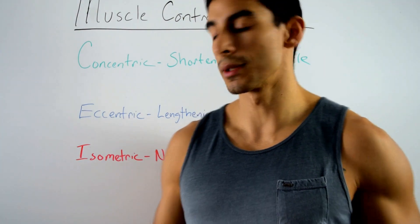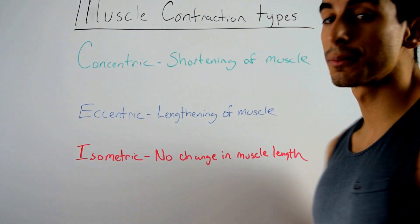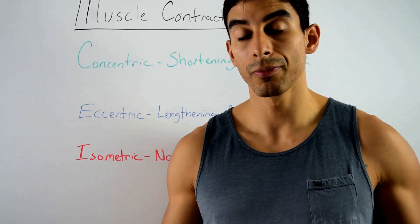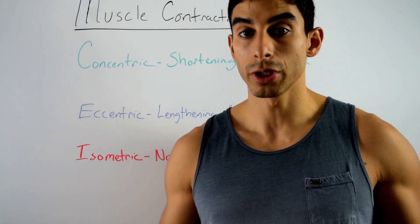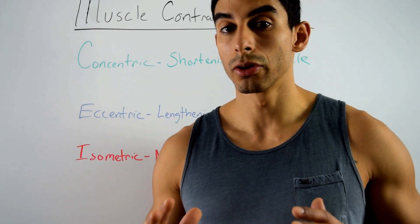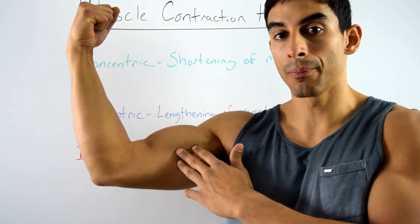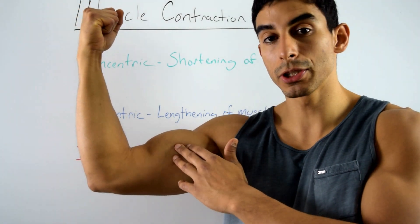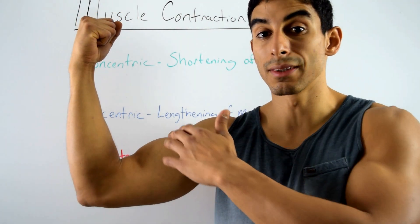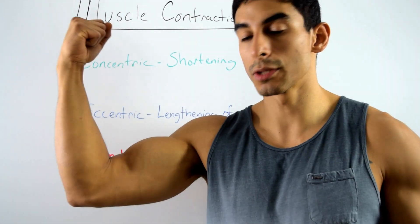So that's concentric — shortening of the muscle — and eccentric — lengthening of the muscle. The next one is isometric contraction, and that means there's no change in the muscle length. So that's if you're doing a plank, for example. The load equals the force being applied, and there is stability with no change in muscle length. If I was holding a weight in a stable position, my muscle would still be contracted but there would be no change in length because the force from my bicep equals the load.